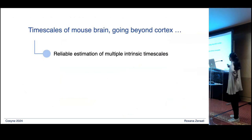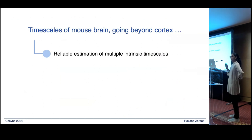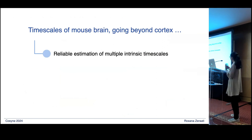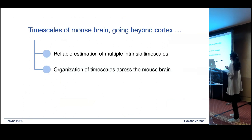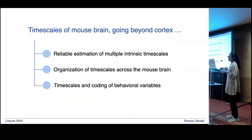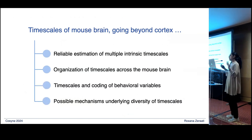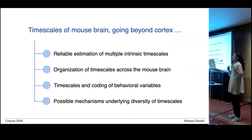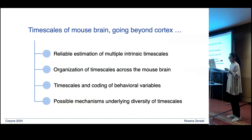During my talk I will first discuss how we reliably estimate timescales from neural activity, then the organizational structure of timescales across the mouse brain, how these timescales relate to behavioral variables, and some initial attempts to find mechanisms to explain the diversity of timescales.